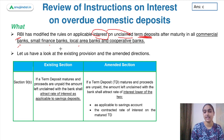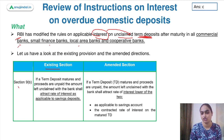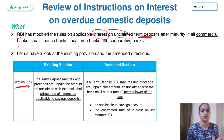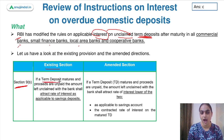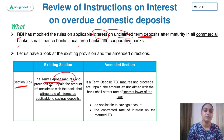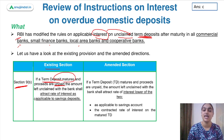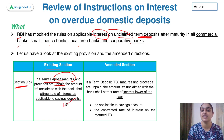The existing provision under the RBI directions stated that if a term deposit matures and the proceeds are unpaid, then the amount left unclaimed with the banks shall attract a rate of interest as applicable to savings deposits.